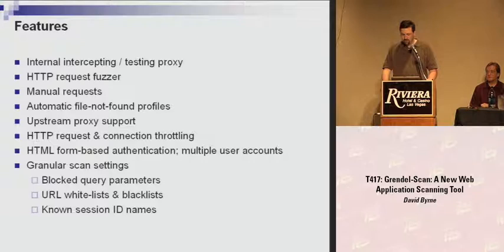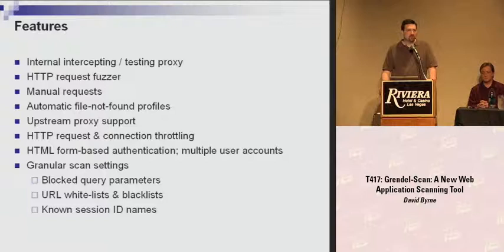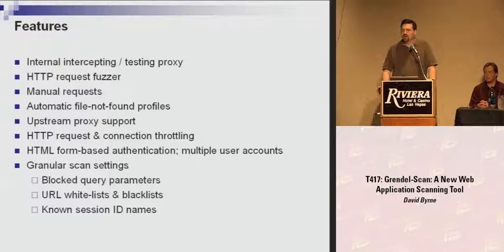Upstream proxy servers are supported. Authentication isn't supported yet due to a bug in HTTP components, but that will be fixed in the next version. The number of HTTP requests or connections can be throttled via several settings — important when scanning a production environment to be sensitive to prod. Any reasonably well-written application should easily handle what a single instance of Grindle can throw at it, but from experience, if anything happens on that web server during a scan, you're going to be blamed. By throttling requests, you can hopefully divert blame to where it belongs.